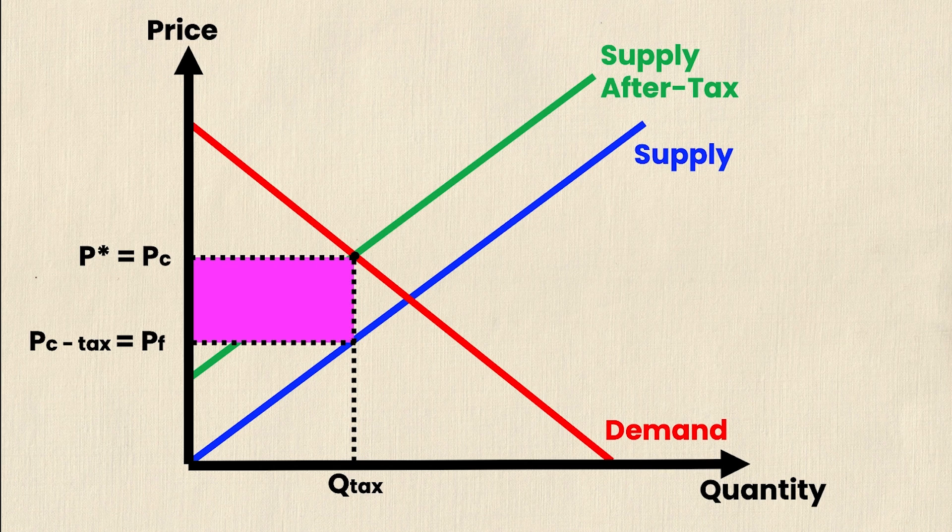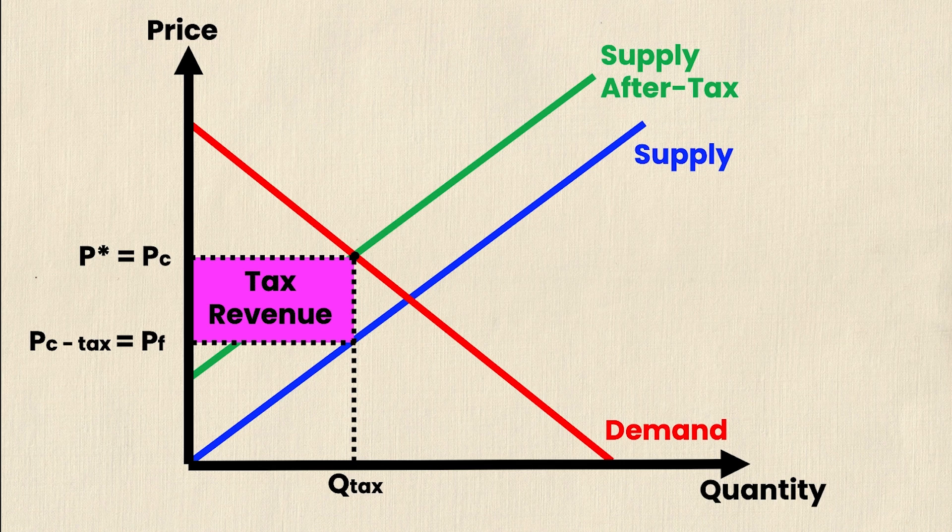Well that leaves us with a rectangle right here and this is actually tax revenue. And that's because, just as I said, the distance between PC and PF is your tax, and the tax is per unit. So we would multiply the tax by the amount of quantity being traded, and so that can be represented in this rectangle.